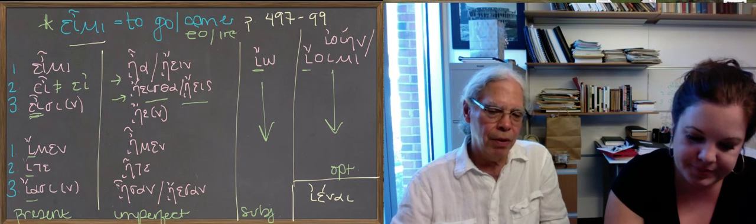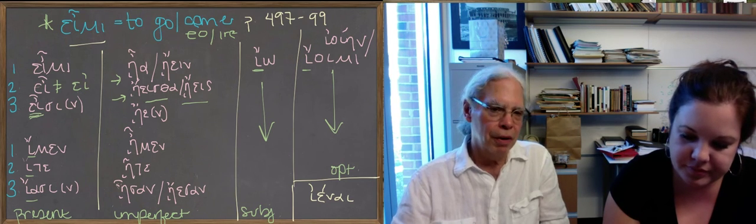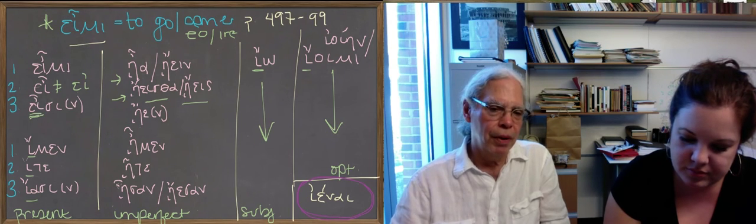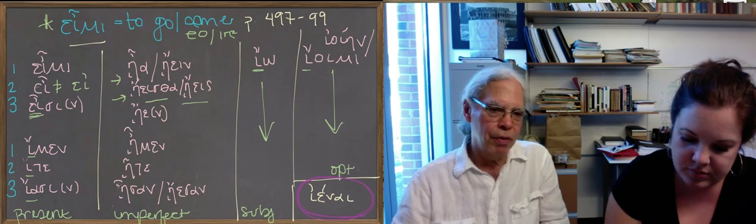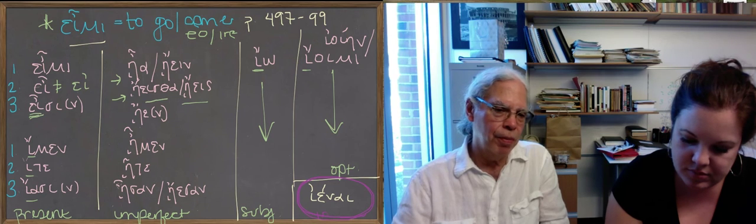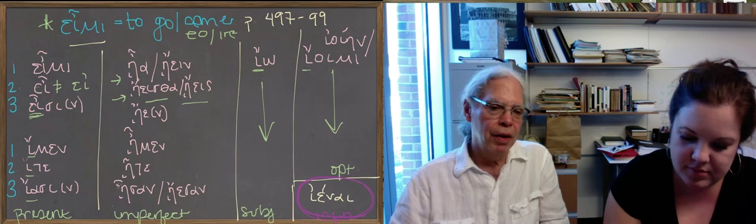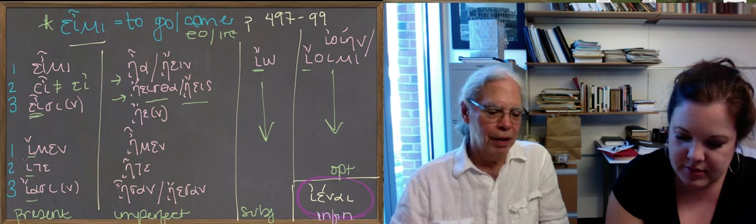Or ἰοῖεν, the iota eta optative you can have as well. But so the root iota is the one that's really the essential, has the essential minimal amount of this root verb to go. But that's the way it works.